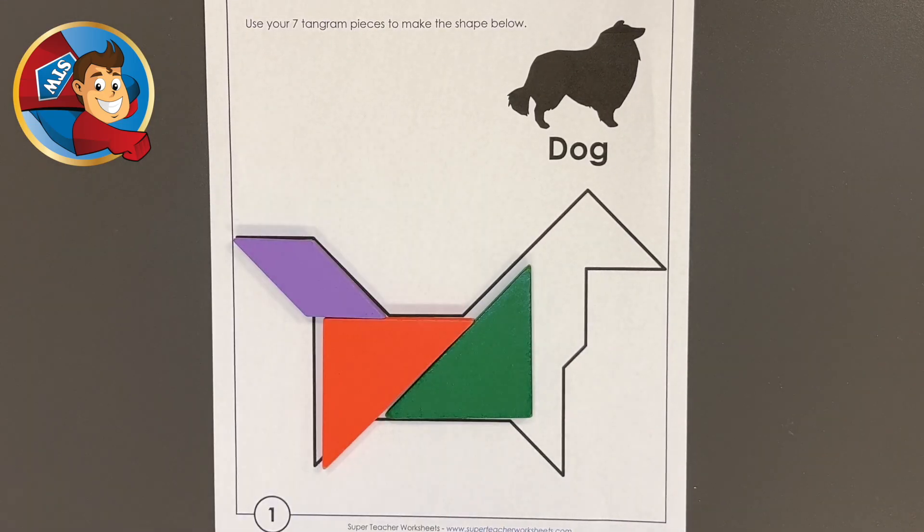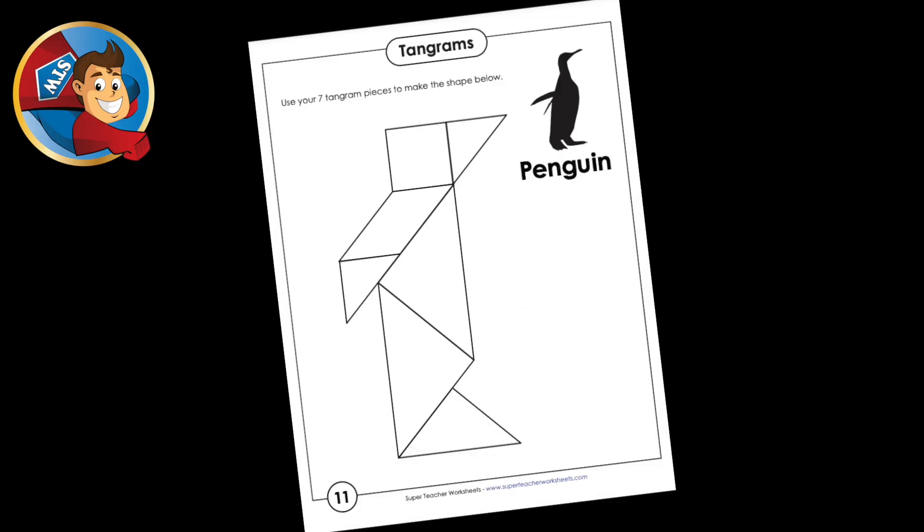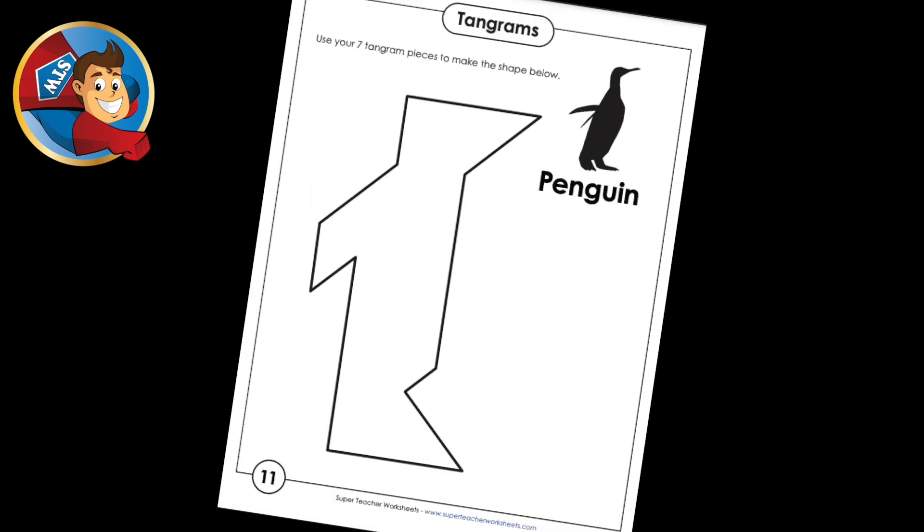Using the worksheet as a guide, make a dog together with your students. Each animal worksheet has two versions, one that has the shapes already placed and one without. Feel free to use the more appropriate one depending on the class.